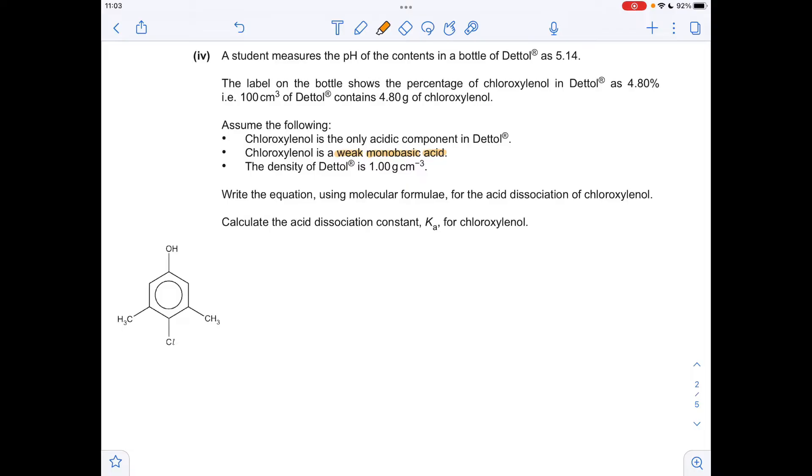So moving on to the next part, we've got to write the equation using molecular formula for the acid dissociation of this, and then calculate Ka for the weak acid. So you'll notice I've underlined the fact that it's a weak monobasic acid. It's going to dissociate partially and donate that H+. So in terms of molecular formula, the acid dissociation equation looks like that. So moving on to the calculation for Ka, we're going to need the expression for Ka. It's the equilibrium concentrations of these divided by the equilibrium concentration of that.